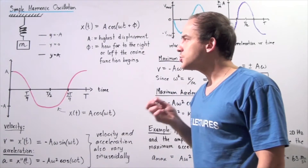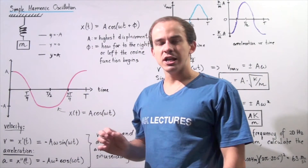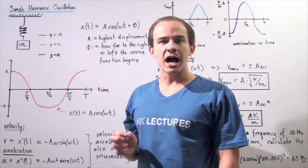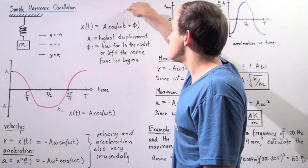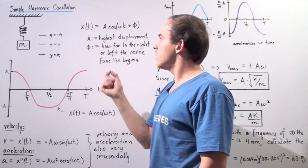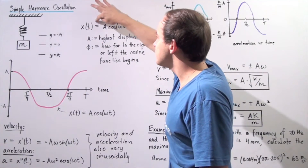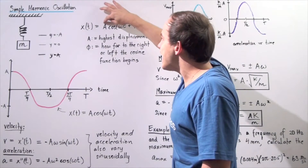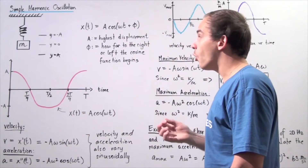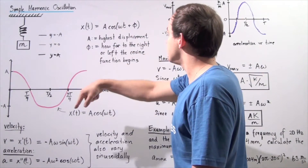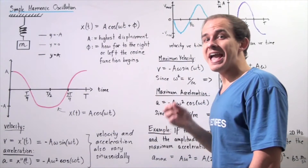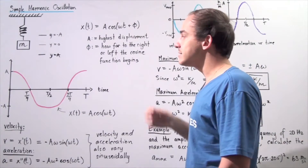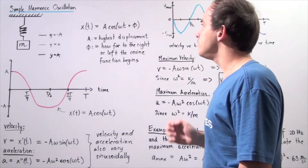In the previous lecture, we saw that there exists an equation giving us the position of the object with respect to time. Our position function is y(t) = A·cos(ωt + φ), where A is the amplitude — the highest displacement of our oscillation, ω is the angular frequency in radians per second, t is the time, and φ is the phase angle.